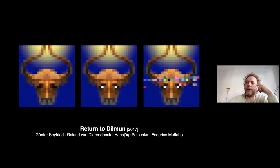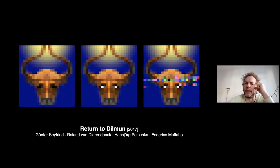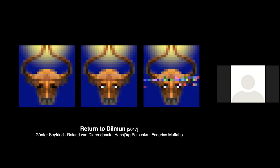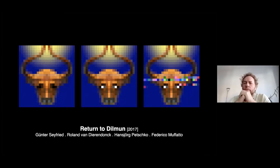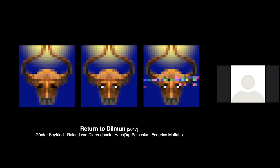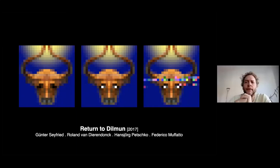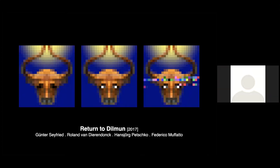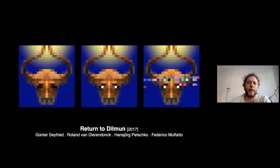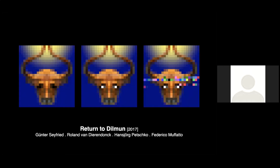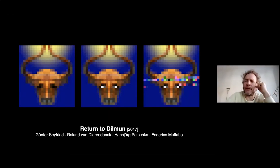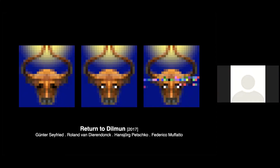The CRISPR-Cas9 system is a prokaryotic immune system that provides adaptive immunity against foreign genomic elements — for example, bacteriophages, which are viruses that target bacteria. Bacteria developed this immune system to eliminate those foreign genome injections.